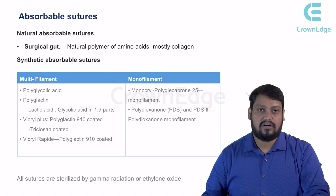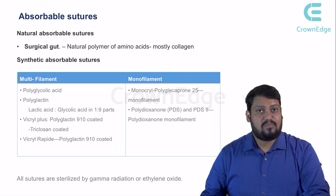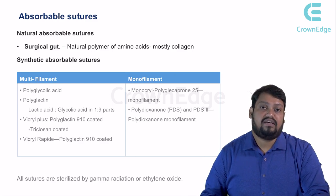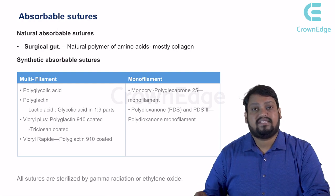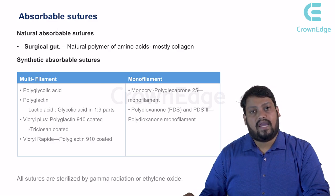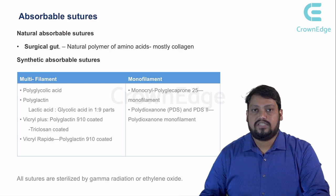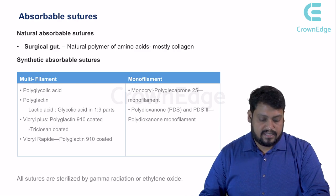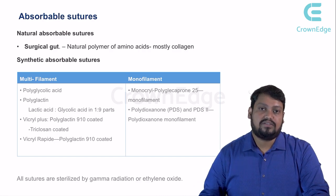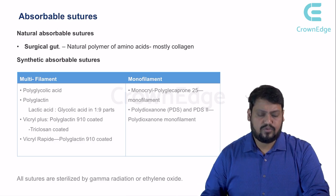Next is vicryl plus and vicryl rapid. Vicryl is the trade name for polygalactin. Vicryl plus has a triclosan coating, making it the most effective option in cases of infection or where infection is anticipated. It is used in smaller diameter applications — less than 6 to 8 mm — in cardiology and intestinal sutures. Vicryl rapid is polygalactin 910, which rapidly dissolves in body cavities. Both are multifilaments.